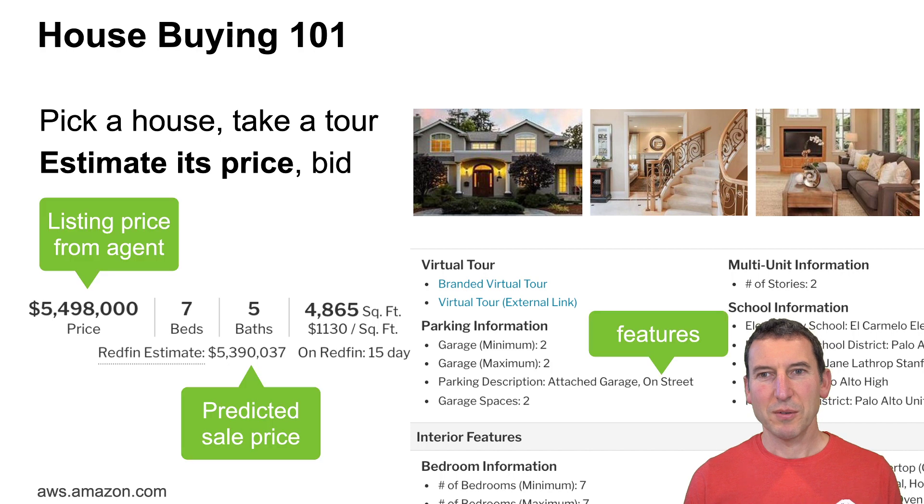Maybe you have some listing price from the agent and then you have some return estimate which estimates how much this house will actually sell for. And then you have a set of features like how many parking spots there are and how close the next best school is. You basically want to build a model such that you can possibly do better than this estimate.